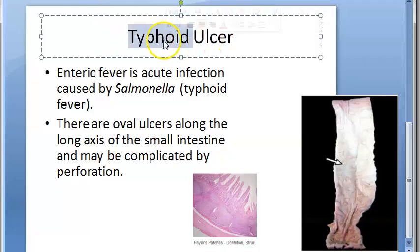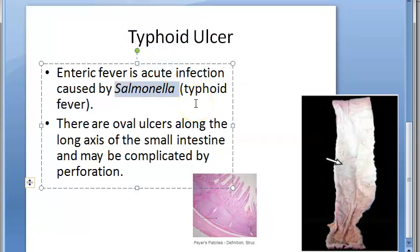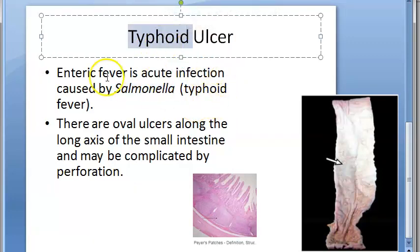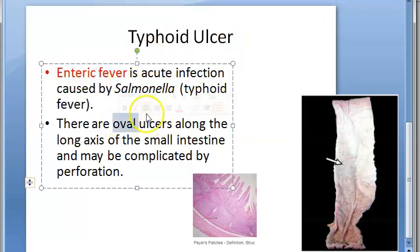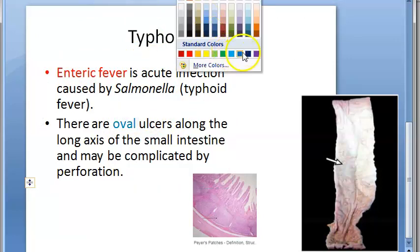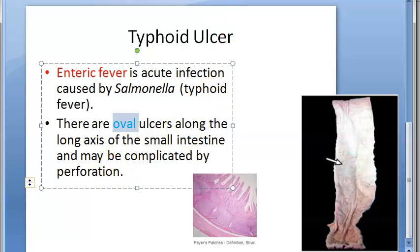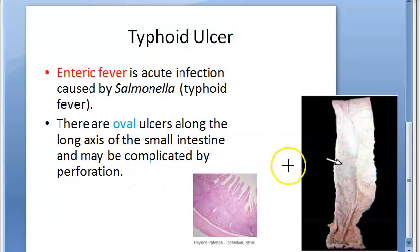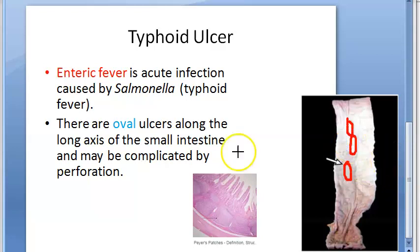Typhoid ulcer — you know what it is. It is caused because of typhoid. Salmonella typhi is the bacteria which causes typhoid fever, also called enteric fever. Because of this enteric fever, in the small intestine there will be ulcers called typhoid ulcers. These ulcers are going to be oval along the long axis. The complication of these ulcers can be perforation.